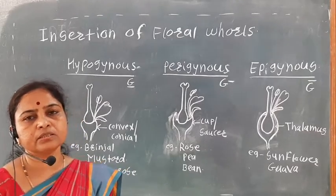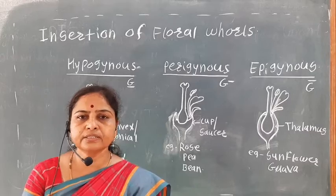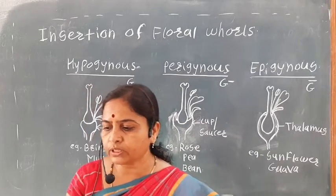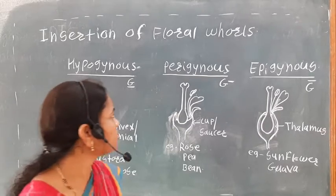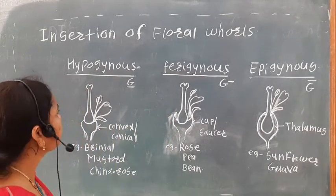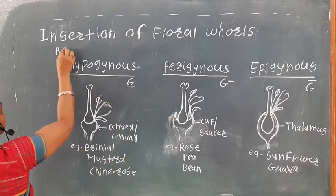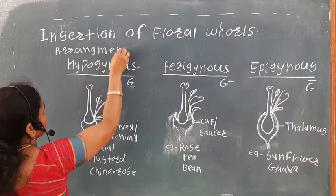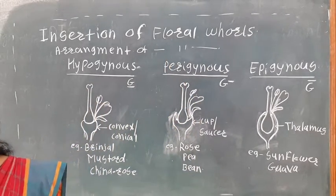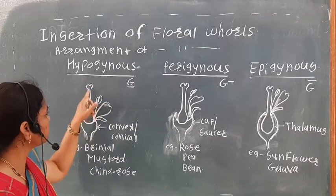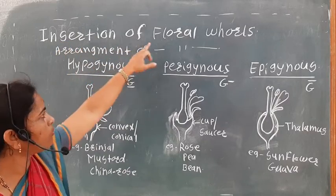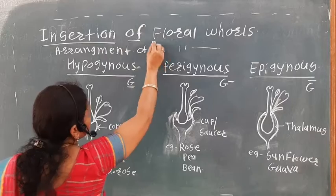This is a new concept — insertion. So what is meant by insertion? Insertion means the arrangement of the floral parts with respect to the gynoecium on the thalamus. The arrangement of these floral whorls or floral parts with respect to the gynoecium on the thalamus is called the insertion of floral whorls.